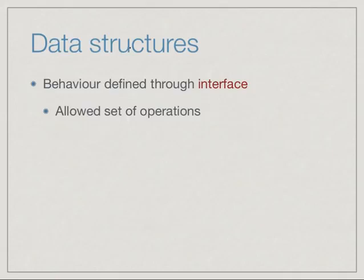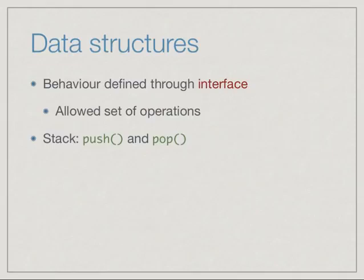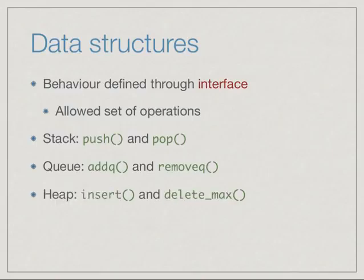A data structure is basically an organization of information whose behavior is defined through an interface. An interface is the allowed set of operations. For a stack, the allowed operations are push and pop, and we can query whether a stack is empty. For a queue, we can add something to the tail using add_queue and remove the element at the head using remove_queue. For a max heap, we have insert to add an element and delete_max to remove the largest element.